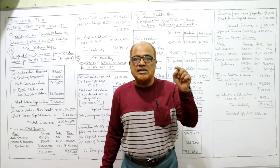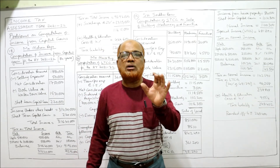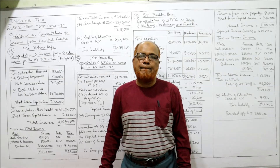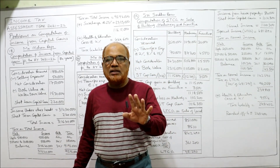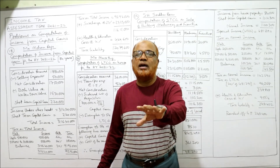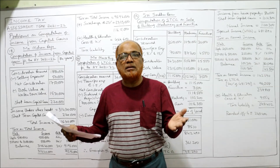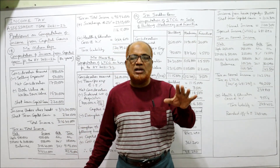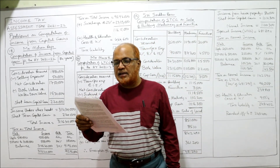The Income Tax Act says: if an assessee sells an asset which is used in the business and which is a depreciable asset, then the gain arising will be short-term capital gain, irrespective of the period of holding. It is immaterial how many years the assessee holds the asset. The only thing you have to see is whether the asset is used in the business and is a depreciable asset. So any gain arising will be short-term capital gain. In this problem, the building is used in the business, so any gain on its sale is a short-term capital gain.